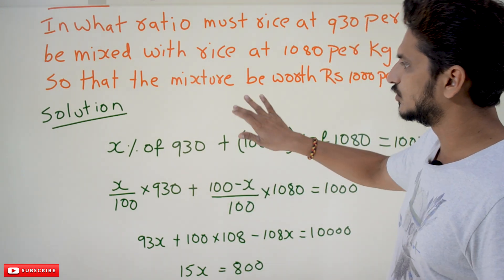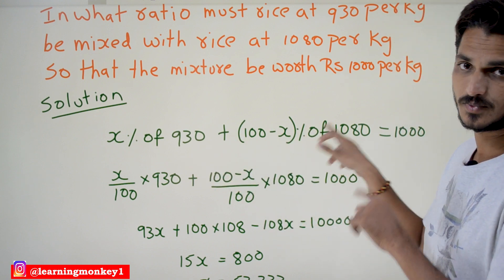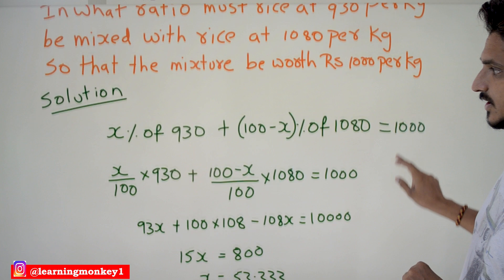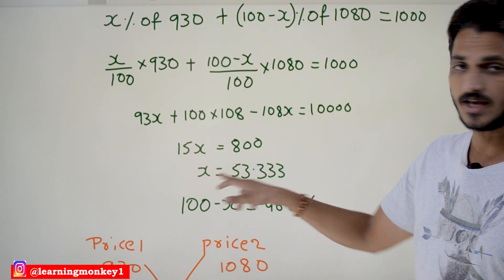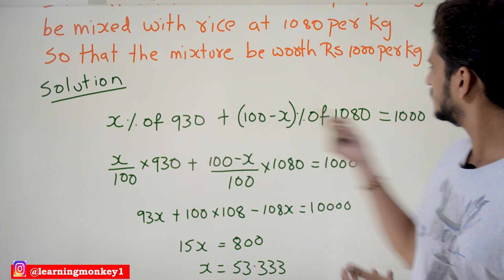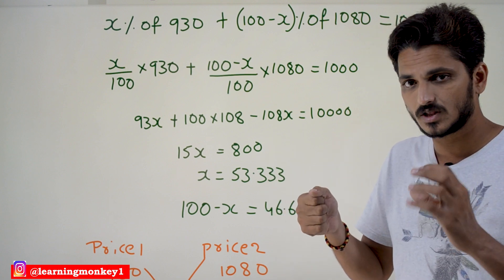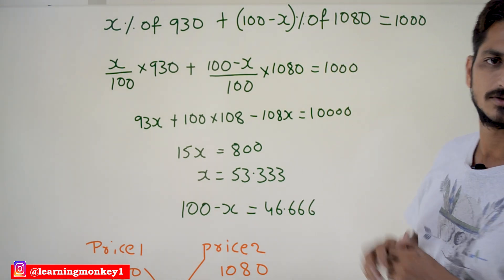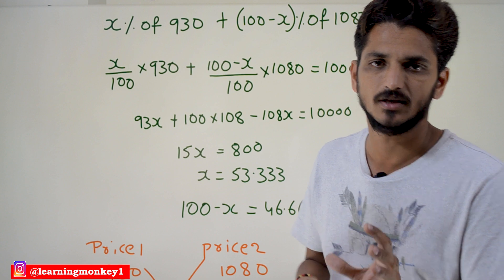We take x percent of the amount from ₹930 and (100 − x) percent from ₹1080, so that the total cost equals ₹1000. Solving: (x/100) × 930 + ((100−x)/100) × 1080 = 1000, which gives 15x = 800, so x = 53.33%. This means 53.33% of the mixture should be the cheaper rice and 46.66% should be the costly rice.